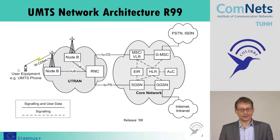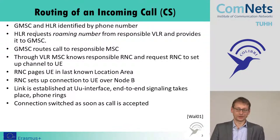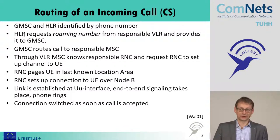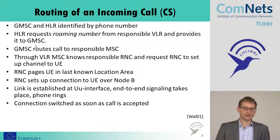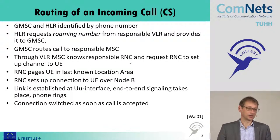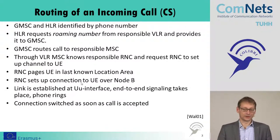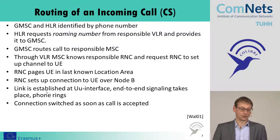We have this again summarized in this slide, because probably this was a bit too fast to follow. We have the gateway mobile switching center and the home location register, identified by the phone number. The HLR requests the roaming number from the responsible visitor location register and provides it to the gateway mobile switching center. The call is forwarded and routed to the responsible mobile switching center. Through the visitor location register attached to the mobile switching center, we know the responsible RNC, and we request the RNC to set up a channel to the user equipment. This is paged via the Node-B to the last known location area, the connection is set up over the Node-B, a link is established on the radio interface, and the phone rings finally. The connection is switched as soon as the call is accepted.